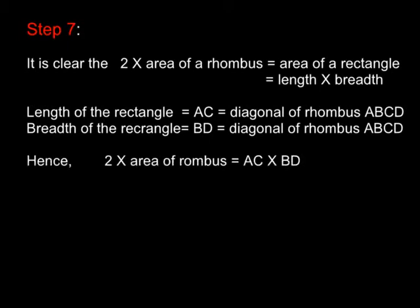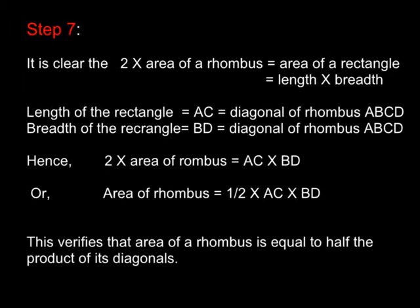Hence, two times area of rhombus is equal to AC times BD. Or, area of rhombus equals half times AC times BD. This verifies that the area of the rhombus is equal to half the product of its diagonals.